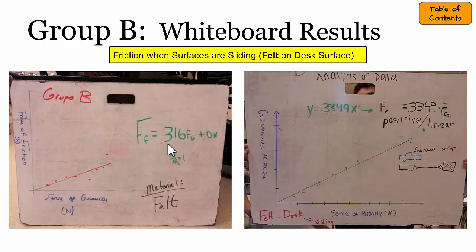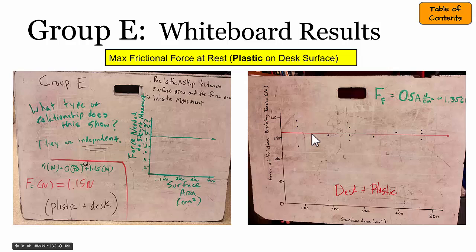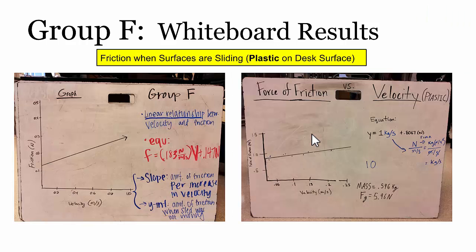This indicated that the type of material definitely affects how big the frictional force can be. The groups that looked at surface area found a wide range of values when measuring the frictional force as they changed surface area, but more or less found that there wasn't a significant effect overall. As they doubled, tripled, and quadrupled the size of the surface area, they found an independent relationship — surface area doesn't seem to matter.